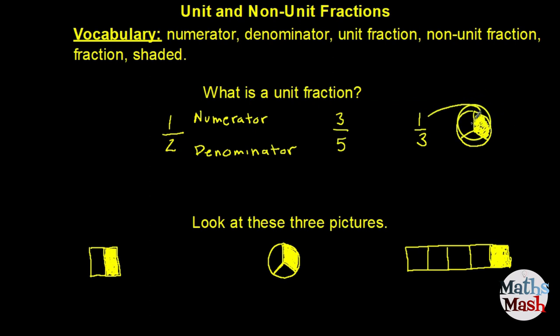In our unit fraction one-third, the numerator 1 tells us how many parts are colored in and the denominator 3 tells us how many parts we have all together.